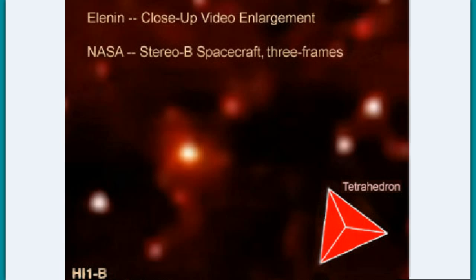I want to share with you a shot of Comet Elenin. Now they said Comet Elenin had broke apart and was destroyed. Well, on its way in, this was a close-up view off the HI-1, and this is Comet Elenin, and it was in a perfect tetrahedron shape, perfectly.